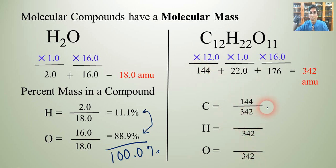Hydrogen will be 22 divided by 342. Oxygen is the 176. And when we divide those out, we get that carbon would be 42.1% of this compound. And hydrogen is about 6.43%. And oxygen is about 51.5% of sucrose. And once again, those percentages add up to something very close to 100%.